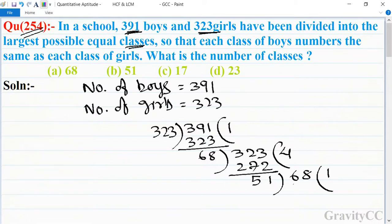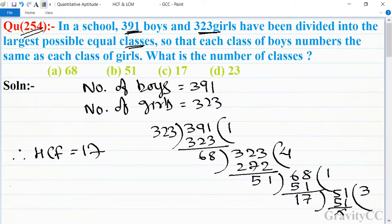So here we get 51. Then 17 goes into 51, therefore HCF is equal to 17.